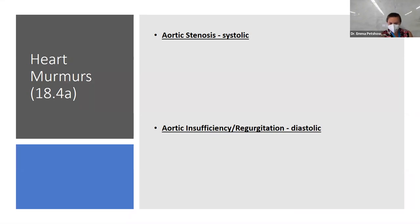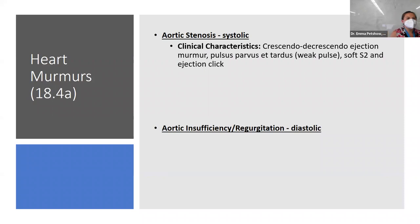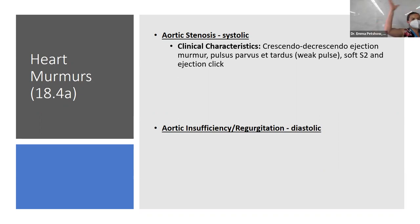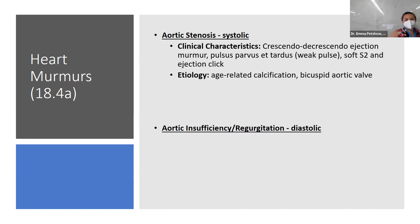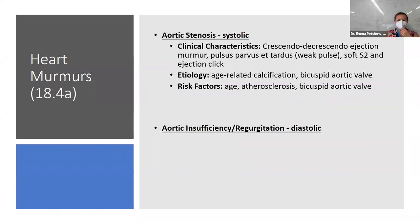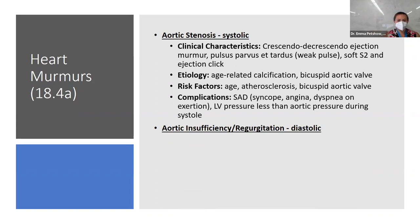Aortic stenosis is a systolic murmur — a crescendo-decrescendo ejection murmur. Clinical characteristics include pulsus parvus et tardus (a weak pulse), a soft S2, and an ejection click. The most common description is the crescendo-decrescendo murmur. Etiologies include age, atherosclerosis, and bicuspid aortic valve — the most common congenital malformation leading to this. Bicuspid aortic valve sets you up for many valvular issues. SAD is the complication mnemonic: Syncope, Angina, and Dyspnea on exertion.